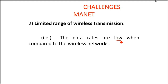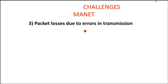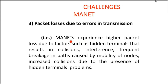There is a limited range of wireless transmission, and data rates are low compared to wired or other wireless networks. MANETs experience high packet loss due to errors in transmission, hidden terminals that cause collisions and interference, and frequent path breakages caused by the mobility of nodes. The presence of hidden terminals often causes collisions, which is a problem that frequently occurs in MANETs.